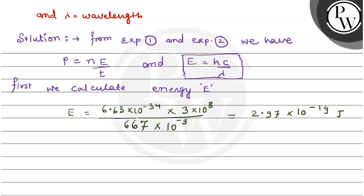Then you will get 2.97 into 10 to the power minus 19 joule. This is the energy value.